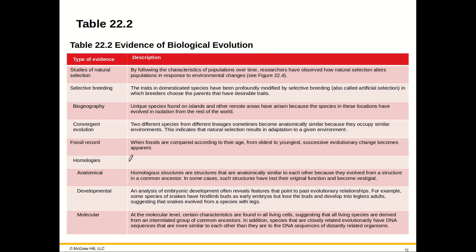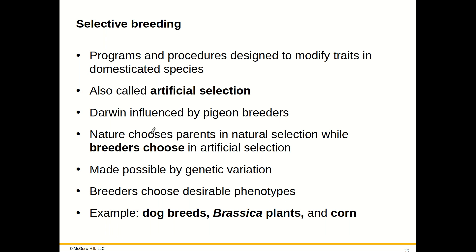Selective breeding, or artificial selection, is like dog breeding. You want a smaller dog, so you breed two small dogs and get an even smaller dog. You want a bigger dog, you breed two larger dogs. This is artificial selection. Darwin used this concept, and the documentary What Darwin Never Knew talks about dog breeding quite a bit as one of the influences on how Darwin came to understand evolution.